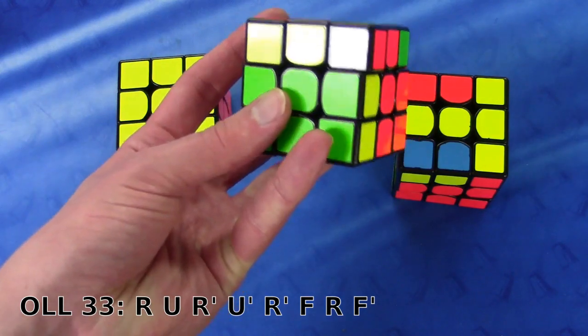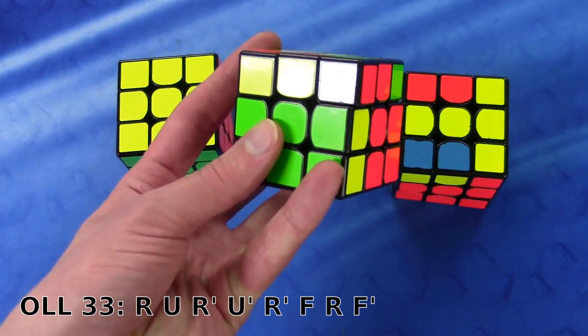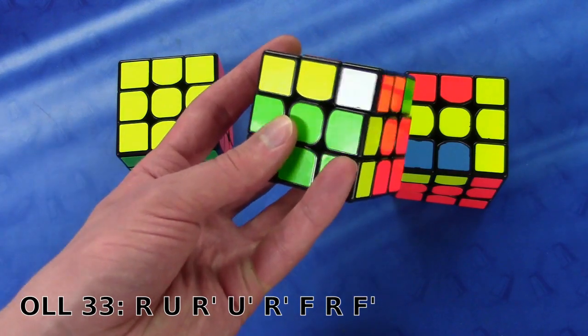Now the tricky part would be the sledgehammer. If you want to do it without a rotation, it's preferable to do it like this, so you can do the R' with your pinky from the front.